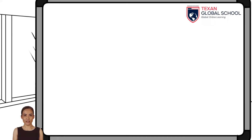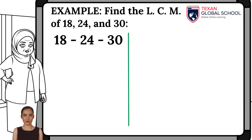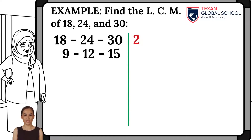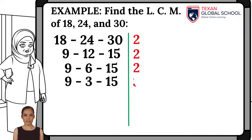In this other example, we will find the least common multiple of 18, 24, and 30. Then obtain the prime factors. Start with 2, since at least one number is divisible. By dividing, results are 9, 12, and 15. Once again by 2, obtaining 9, 6, and 15. And we can still divide by 2, obtaining 9, 3, and 15.